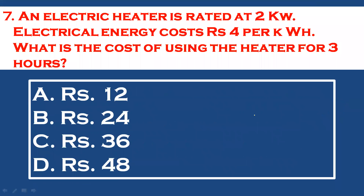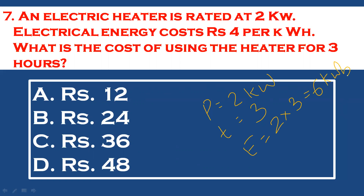Question 7: An electric heater is rated 2 kilowatt. Electrical energy costs rupees 4 per kilowatt hour. What is the cost of using the heater for 3 hours? Power = 2 kW, time = 3 hours. Energy = power × time = 2 × 3 = 6 kilowatt hours. Cost = 6 × 4 = 24 rupees. Option B is the correct answer.